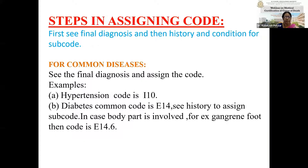Now let us see the simple mechanism of assigning a code to any disease. First, see the final diagnosis and then see the history and the condition for the subcode. According to the final diagnosis, the main code will be given, and according to the history and condition, the subcode will be given. For common diseases, for example, in hypertension the code is I10. In diabetes the common code is E14. If any body part is involved, for example gangrene of the foot, then the code will be E14.6 — E14 is the main code and .6 is the subcode.